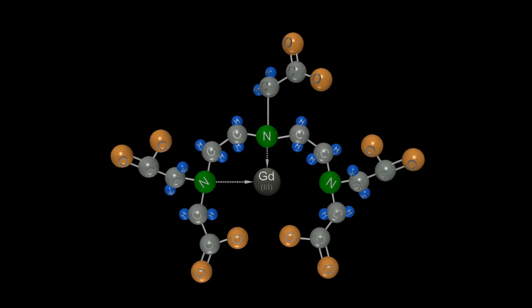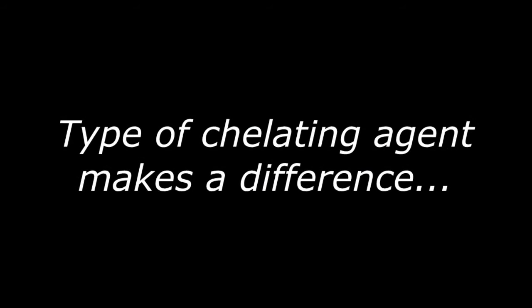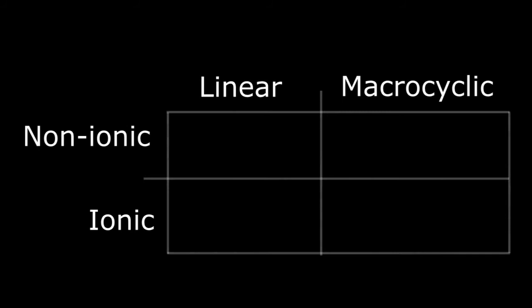If the kidneys aren't working, the complex stays longer in the bloodstream and with time the gadolinium ion could dissociate from the carrier molecule and deposit in the regional tissues. This also seems to depend on the type of chelating agent utilized. Based on two molecular features, linear versus macrocyclic and ionic versus non-ionic, a simple four square chart ranks the relative risk with the highest being the linear non-ionic and the lowest risk with the macrocyclic ionic configuration.